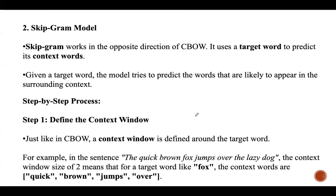The second model is the Skip-Gram model, which takes the opposite approach of CBOW. Here, the Skip-Gram model predicts the context words given a target word. Step one is to define the context window, just like in CBOW. For example, in 'the quick brown fox jumps over the lazy dog', if the target word is 'fox' and window size is 2, the context words are 'quick', 'brown', 'jumps', and 'over'.